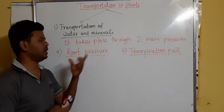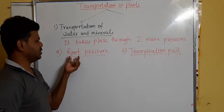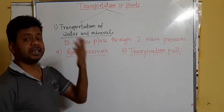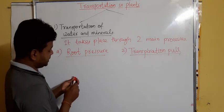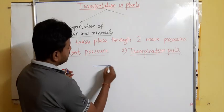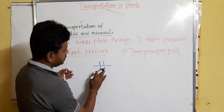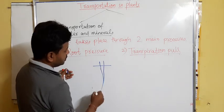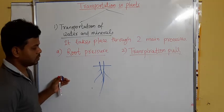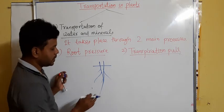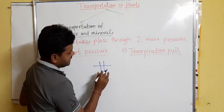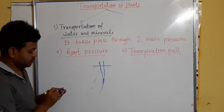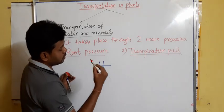First we will discuss what is root pressure. As the name suggests, the root is creating a pressure to move the water in the upward direction. What happens is: the root is present inside the soil, and the cell of the root which is in contact with the soil — listen carefully — this root cell, which is in contact with the soil, by using ATP it collects ions from the soil into the cell.